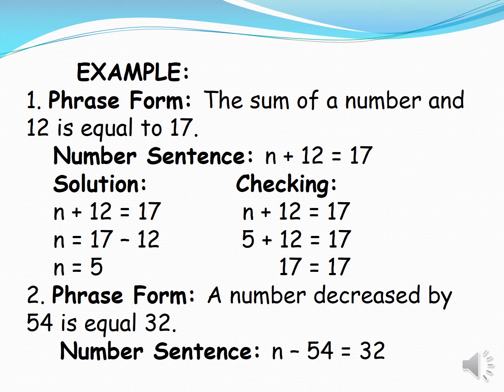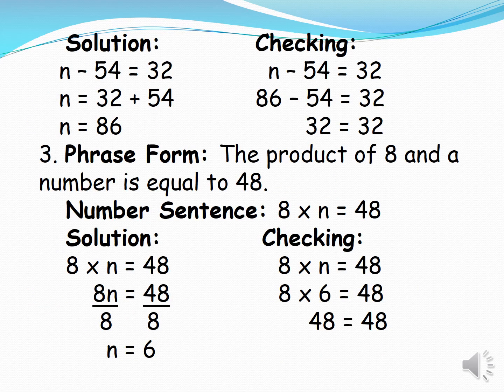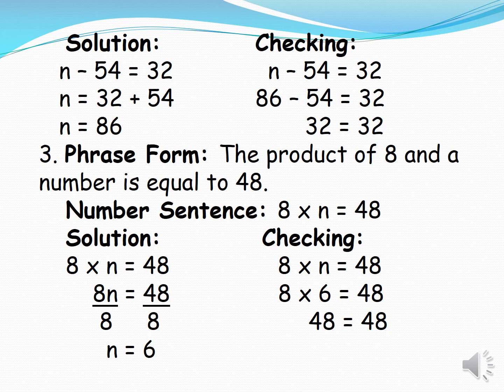Number 2. Phrase form, a number decreased by 54 is equal to 32. Number sentence, n minus 54 is equal to 32. Solution, n minus 54 is equal to 32. N is equal to 32 plus 54. N is equal to 86.